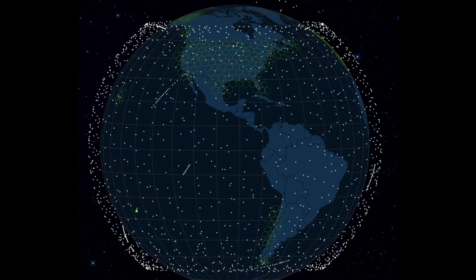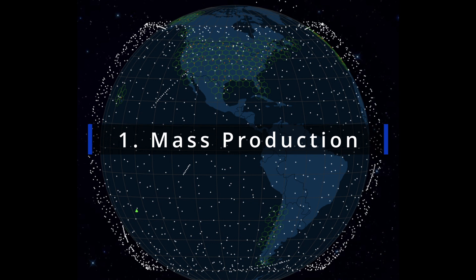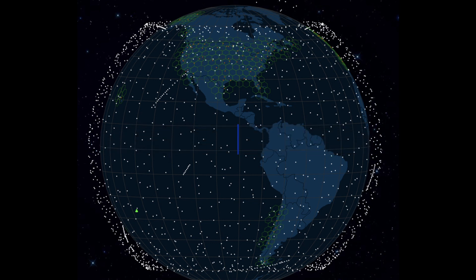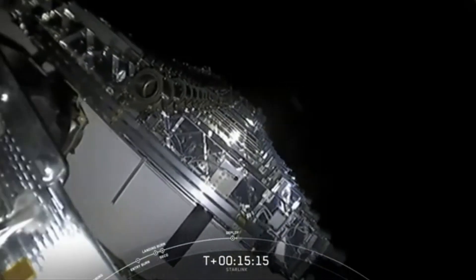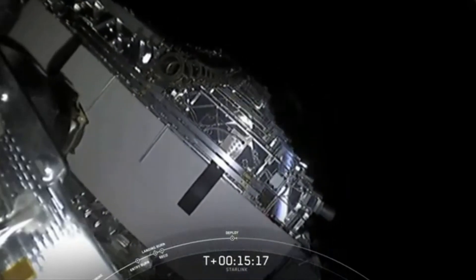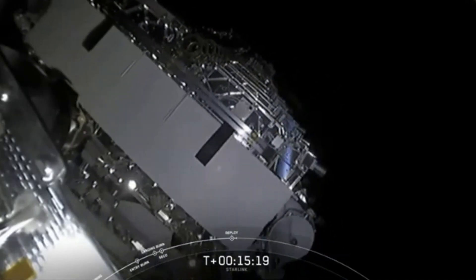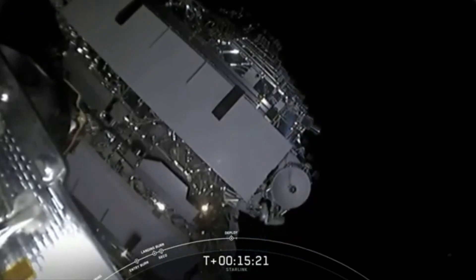Just like SpaceX has already done, they've made 2500 Starlink communication satellites for $250,000 each. Each of them even have an ion drive to move around with. So we keep things cheap, small and simple.